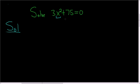To do that, we'll subtract 75 from both sides. Minus 75 minus 75. These cancel and we end up with 3x² equals -75.